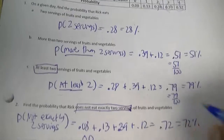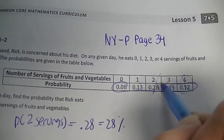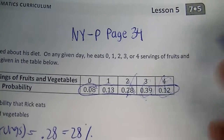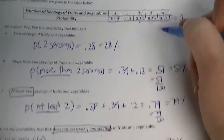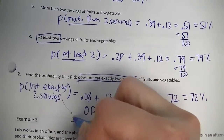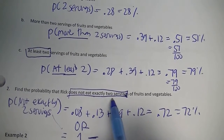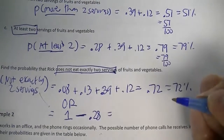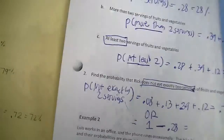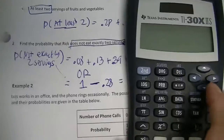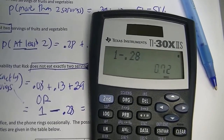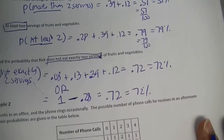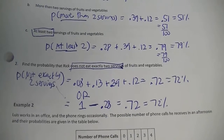The second way: remember all probabilities add up to one. So add eight hundredths, thirteen hundredths, twenty-eight hundredths, thirty-nine hundredths, and twelve hundredths — you get one. Then take one and subtract the value you don't want, which is the exactly-two-servings probability: one minus twenty-eight hundredths equals seventy-two hundredths. There are two ways to do that problem — pick which way you like better, and if you know both ways, that's fantastic.